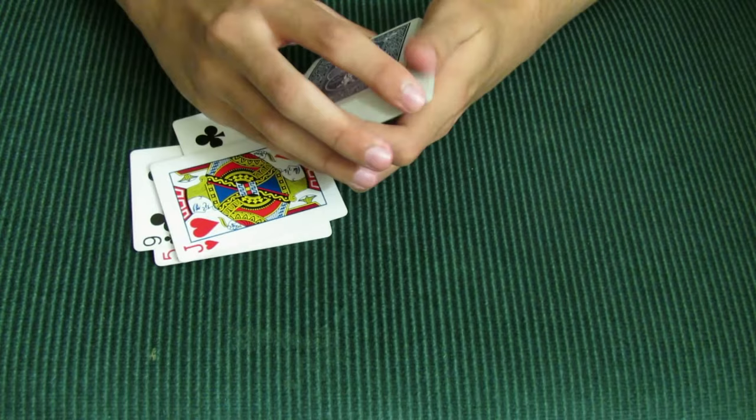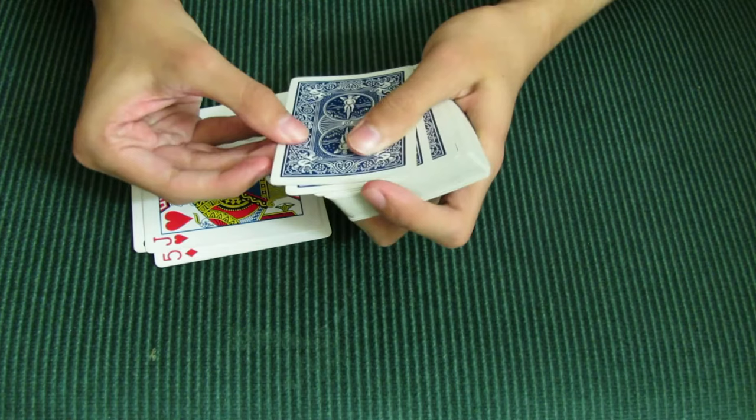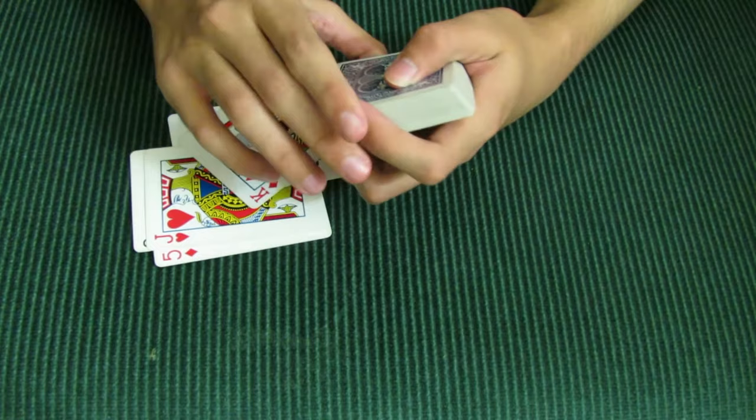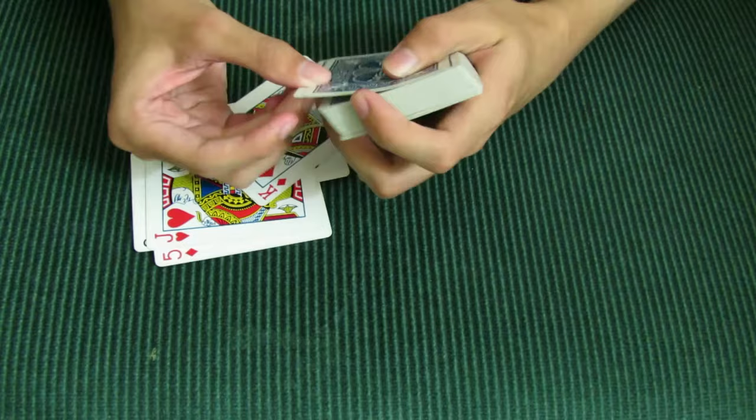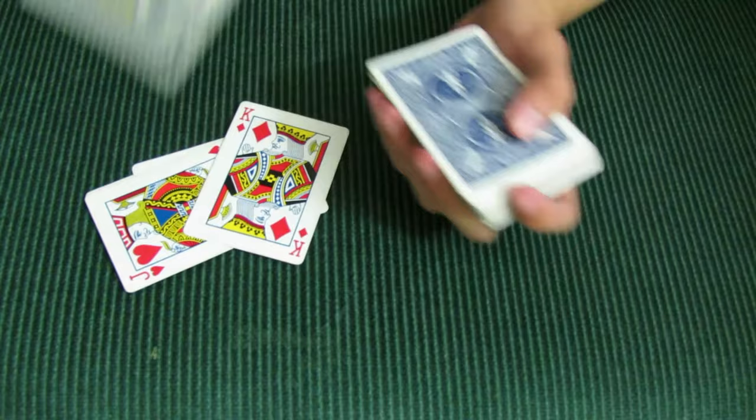And a good tip is when you do it, tilt your hand a little bit. So instead of doing it from here where it's a little bit more noticeable, if you do it like that, which if you look in the movie, that's how he does it. His hand is a little tilted when he deals the cards because that makes it less noticeable.